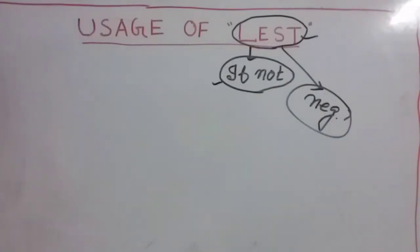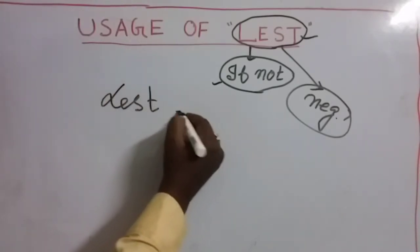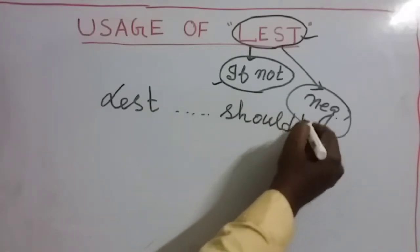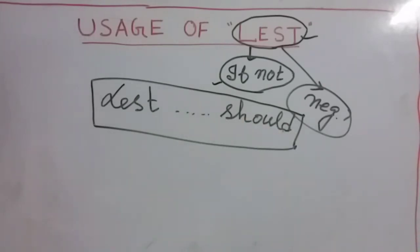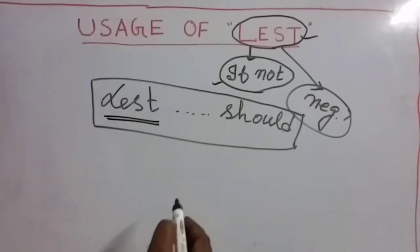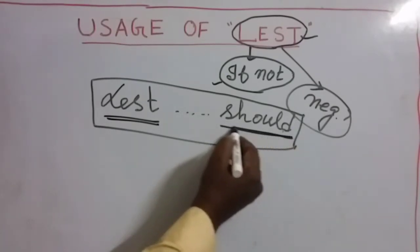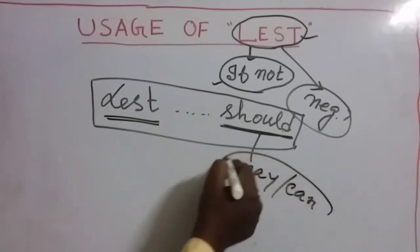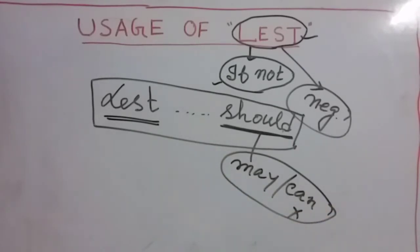If we think about the proper structure of this term, it will be: 'lest [clause] should.' This is the suitable structure of this conjunction. That means if you use this term in your sentence, after that you have to use 'should.' Mind it — it is only 'should,' not 'may,' 'can,' or any other modal. Only 'should' must be used.